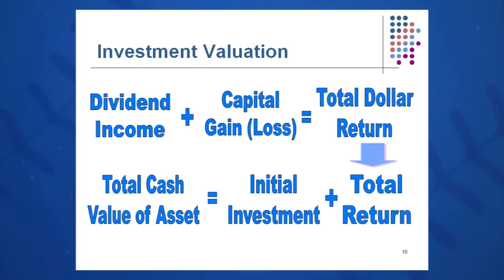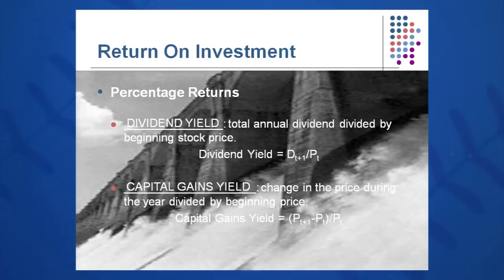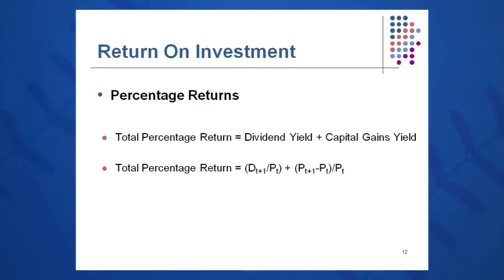We like in many cases to talk about percentages. If you tell a friend you invested a thousand dollars and made $480, they get somewhat excited — but if you say you made a 48% return on investment, everyone wants to know what stock you bought. So we break total return into two components: dividend yield, which is D1 over P0 (or D sub T+1 over P sub T), and capital gains yield, which is P sub T+1 minus P sub T over P sub T. Total percent return is D sub T+1 over P sub T plus P sub T+1 minus P sub T over P sub T — these share a common denominator and can be combined into one equation.